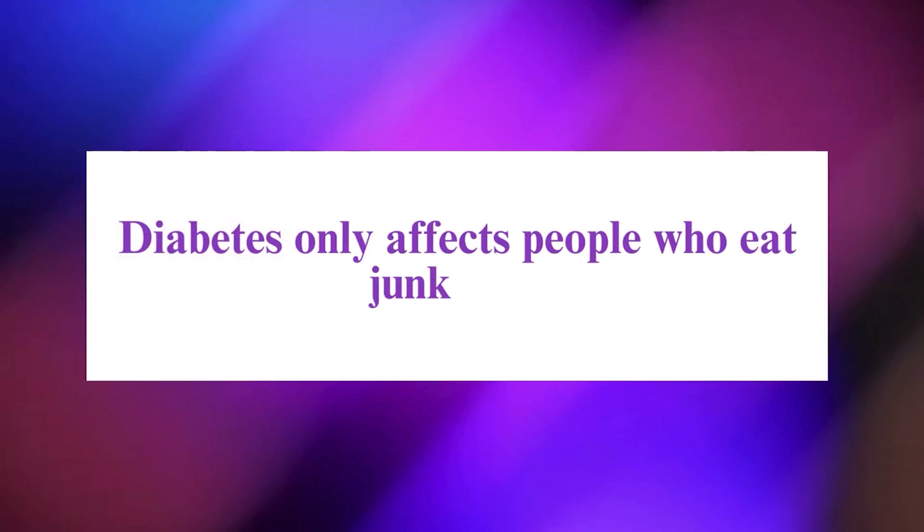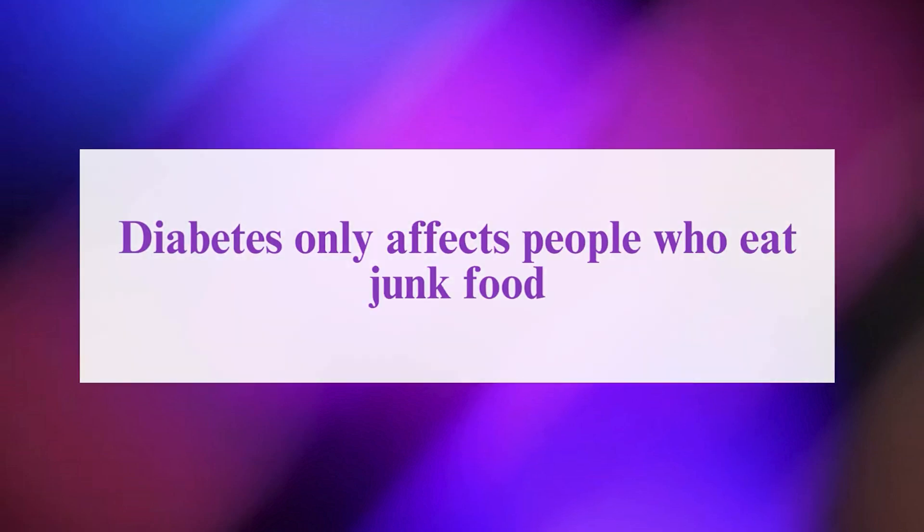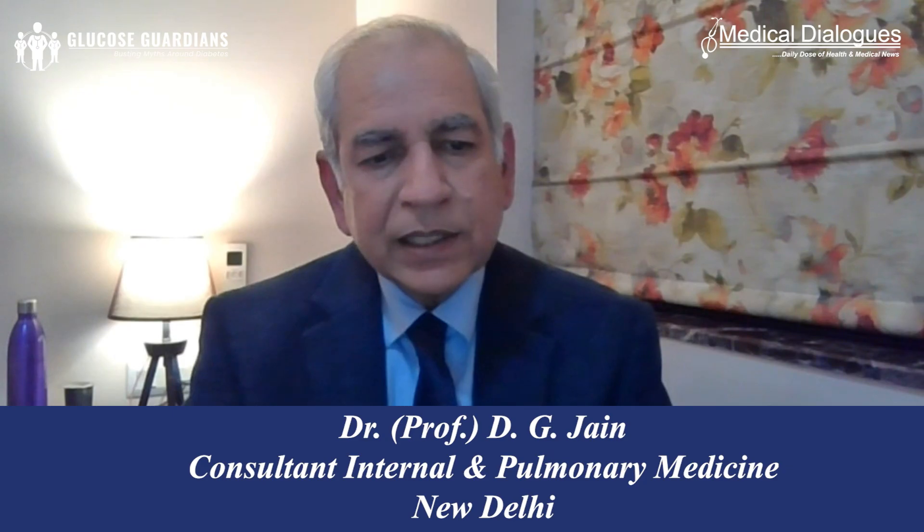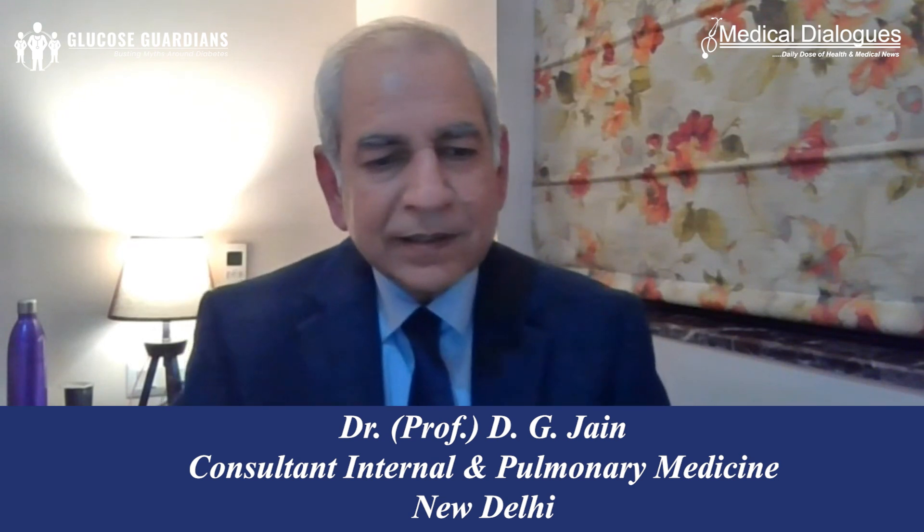All these factors predispose those with HbA1c more than seven percent to a pro-thrombotic or pro-coagulant state, which may account for the higher rates of myocardial infarction. That is why HbA1c should always be kept less than seven percent — prevention is better than cure. There is a myth that diabetes only affects people who eat junk food.